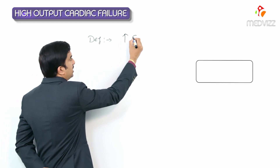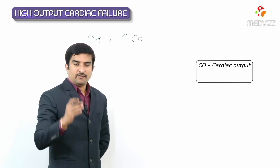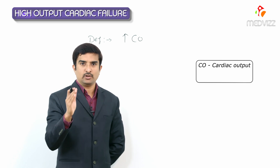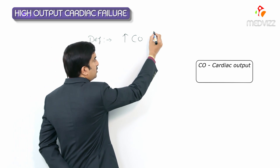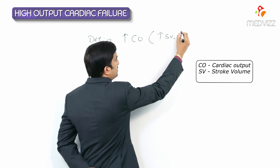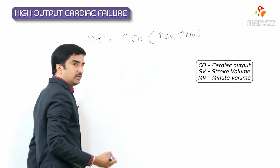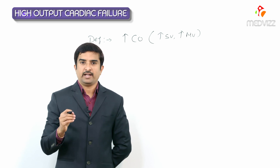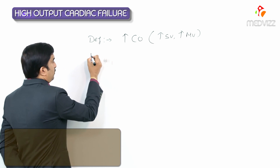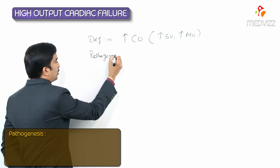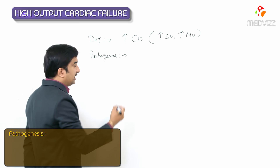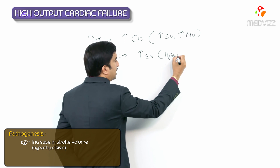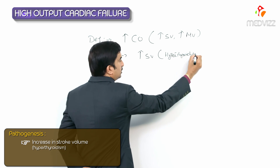In high output cardiac failure, there will be an increase in the cardiac output — that is, an increase in the stroke volume and an increase in the minute volume. Now, what is the pathogenesis of high output cardiac failure? The pathogenesis involves an increase in the stroke volume.